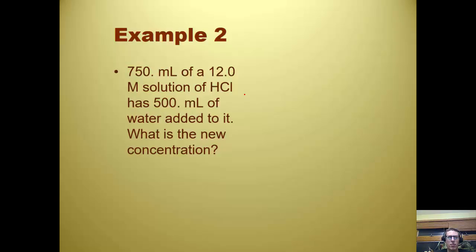So, same problem. We have M1V1 equals M2V2. And we know our M1, again, it's going to be higher, 12.0 molar. And we even know our V1 now, because this is our starting volume. That equals our M2, which is our unknown, new concentration. And our V2, which we also have. But our V2 is not 500 milliliters. It is 750 plus 500.